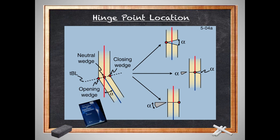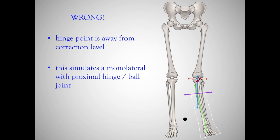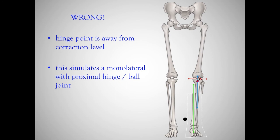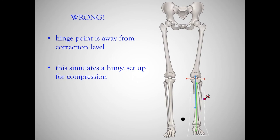What if you don't follow the rules? If the hinge point is away from the correction level, simulating one of those monolateral ball joint fixators, you hinge around that hinge point away, you align the axes but they're offset, and you've created a translational deformity. If you place it on the concave side and off the correction level line, you have compression and a bony offset translational deformity.